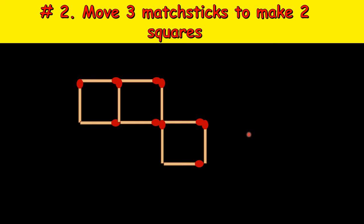And the time is up, so let's see the solution. We move this is the first move, second, and third. And now you see two squares: the bigger one and the smaller one.